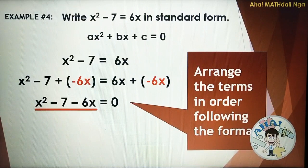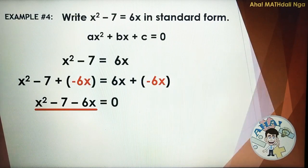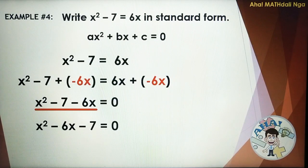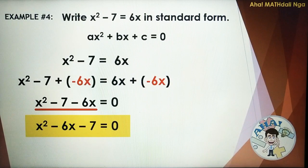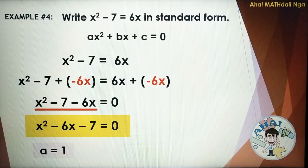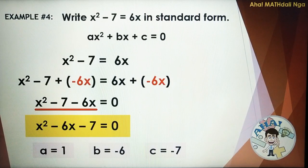Observe that the terms on the left side of the equation are not yet arranged in order, so we need to arrange them following the format. We have X squared minus 6X minus 7 is equal to 0. This is now the equation in standard form. The numerical coefficients are: A is equal to positive 1, B is equal to negative 6, and C is equal to negative 7.